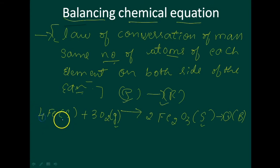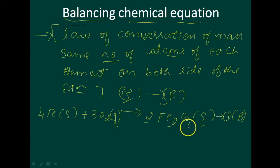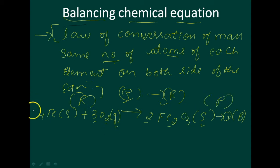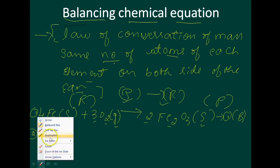Here the iron count is 4, because 2 × 2 = 4. For oxygen, 3 × 2 = 6 on the product side. So the atoms are the same on both the reactant side and the product side. This is one example. Now consider the next one.